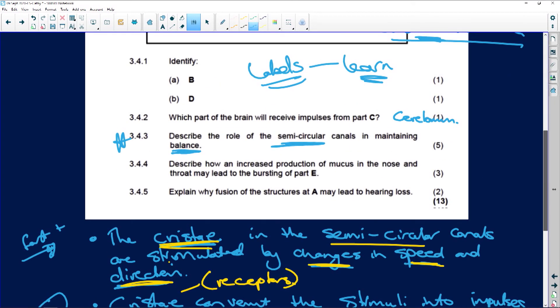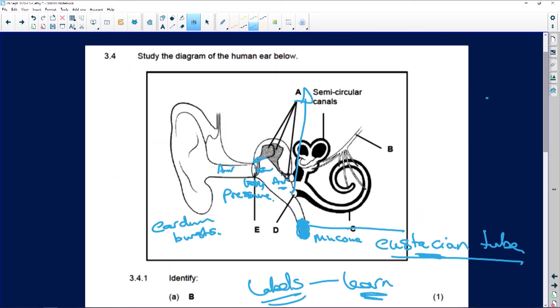Okay, last question. Let's quickly check. Explain why fusion of the structures at A may lead to hearing loss. People, these semi-circular canals amplify sound. So when they are fused, they're not going to vibrate very nicely, so they won't amplify sound. So a nice vibration is not going to pass into the inner ear and your cochlea is not going to be stimulated nicely, and your hearing is going to be impaired. All right, done, done, dusted.